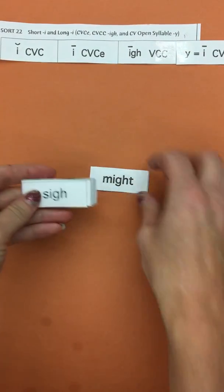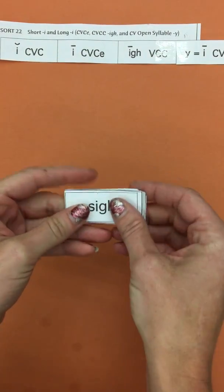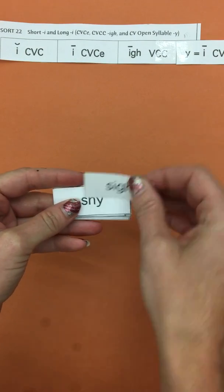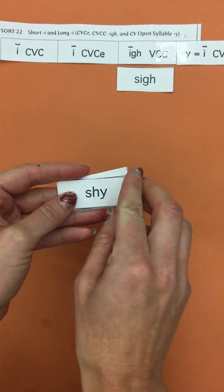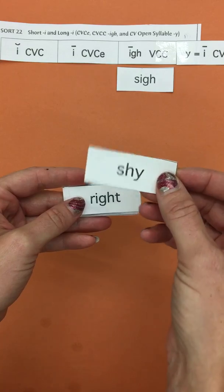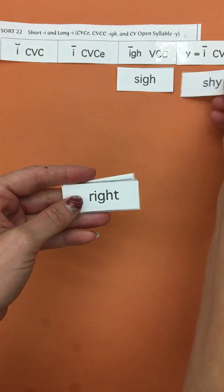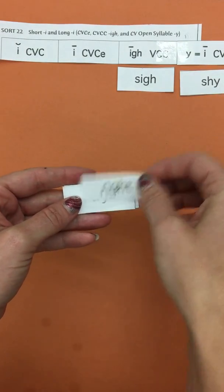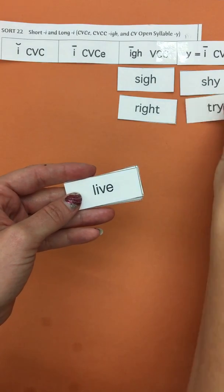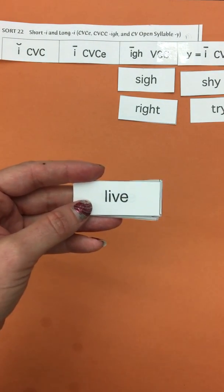This one's fairly simple to sort. The tricky part will be doing the blind sort. So shy sounds like I, but it's really Y. Right, I-G-H, try.